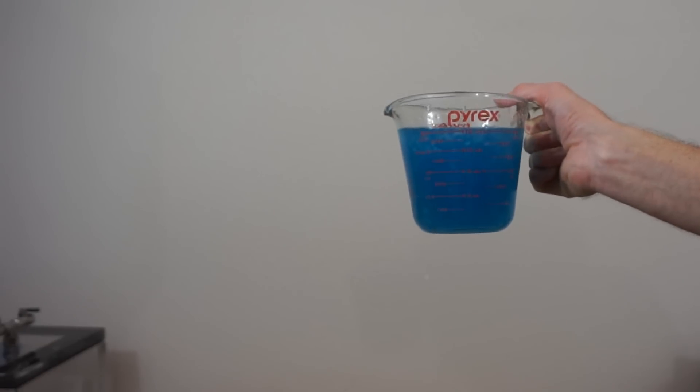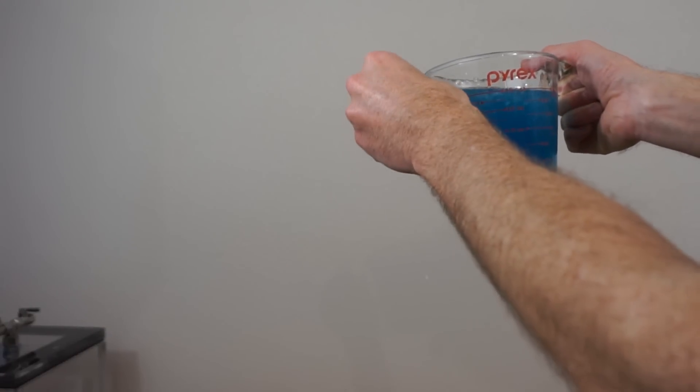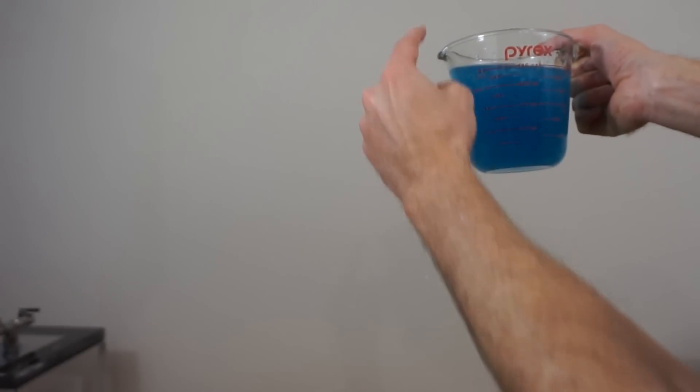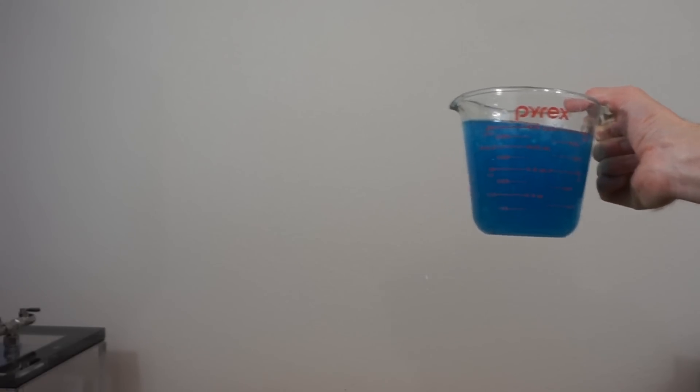And so what that does is if you pour the liquid, the liquid that has already come out starts pulling the other liquid out, and it just keeps pulling it, and it essentially pours itself.